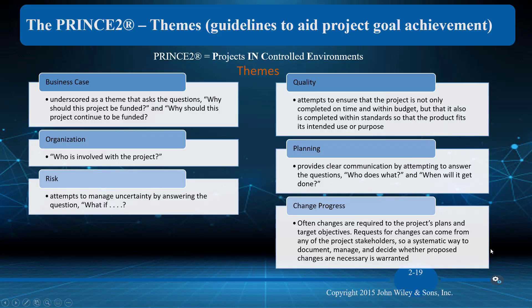Here are the themes that are associated. Business case is going to show up both in the themes and the method. The business case theme asks the question: why? So here we start getting into the who, what, where, when, how, and why. The 'who' in the organization — who's involved with the project, who are the stakeholders, who is going to be affected? The risk theme addresses 'what if.'